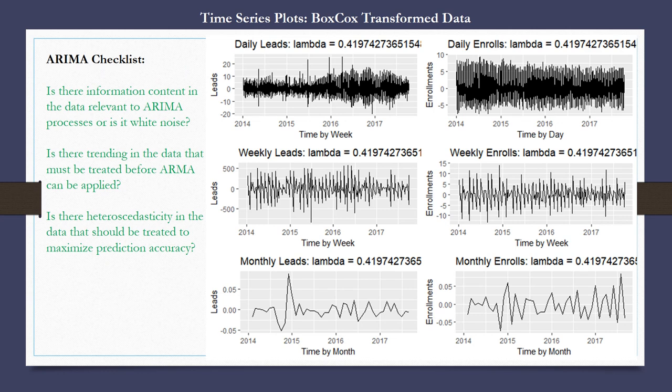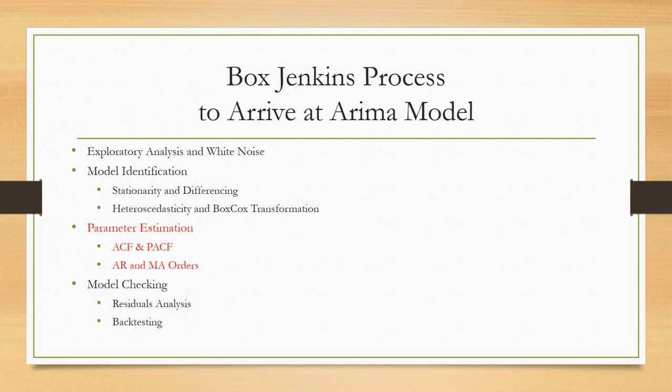Looking at the Box-Cox transformed data, because there was a high degree of variability, a one-size-fits-all transformation won't perfectly smooth the data — but it does appear more evenly distributed after the Box-Cox transformation than before, in all three cases: the daily, weekly, and monthly data. Now that we have identified and made the required transformations, we can move on to parameter estimation — specifically the use of ACF and PACF to identify AR and MA orders, both seasonal and non-seasonal.